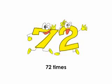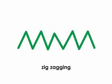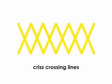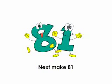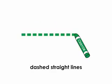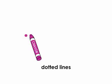Zigzag 63 times, crisscross 72 times — zigzagging, crisscrossing lines. Next make 81 dashed straight lines. And finally, 90 dotted lines.